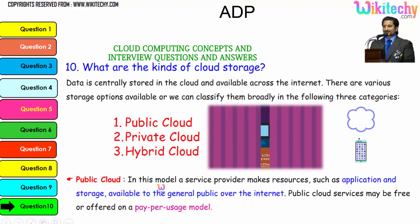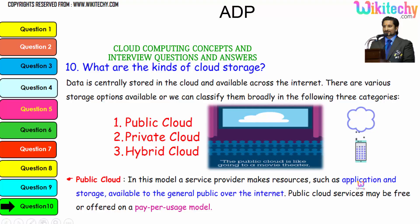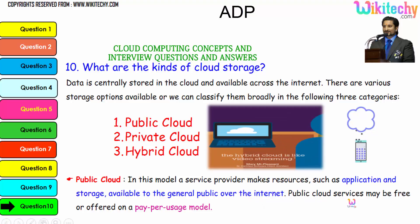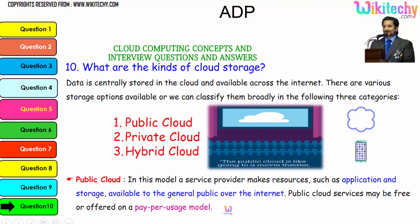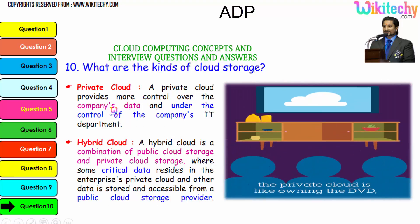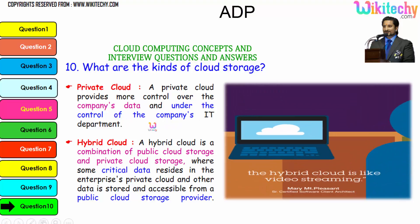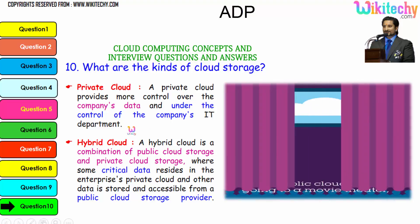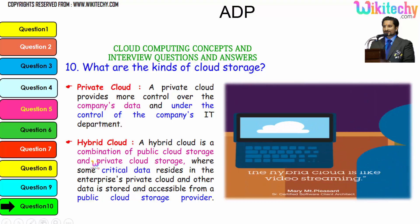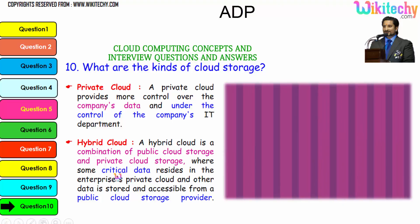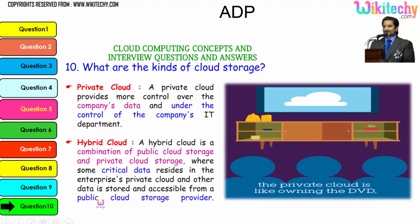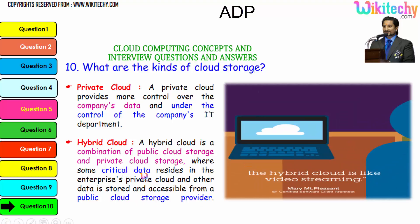In the public cloud model, a service provider makes resources such as applications and storage available to the general public over the internet. Public cloud services may be free or offered on a pay-per-usage model. A private cloud provides more control over the company's data under the control of the company's IT department. A hybrid cloud is a combination of public and private cloud storage, where some critical data resides in the enterprise private cloud and other data is stored and accessible from a public cloud storage provider.